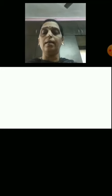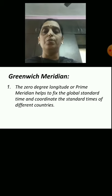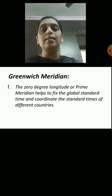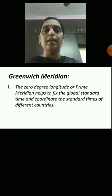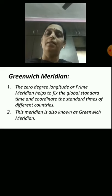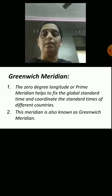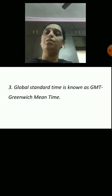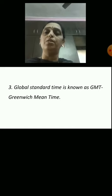Our next topic is the Greenwich Meridian. The zero degree longitude, or prime meridian, helps to fix the global standard time and coordinate the standard times of different countries. This meridian is also known as the Greenwich Meridian. Global standard time is known as GMT, which stands for Greenwich Mean Time.